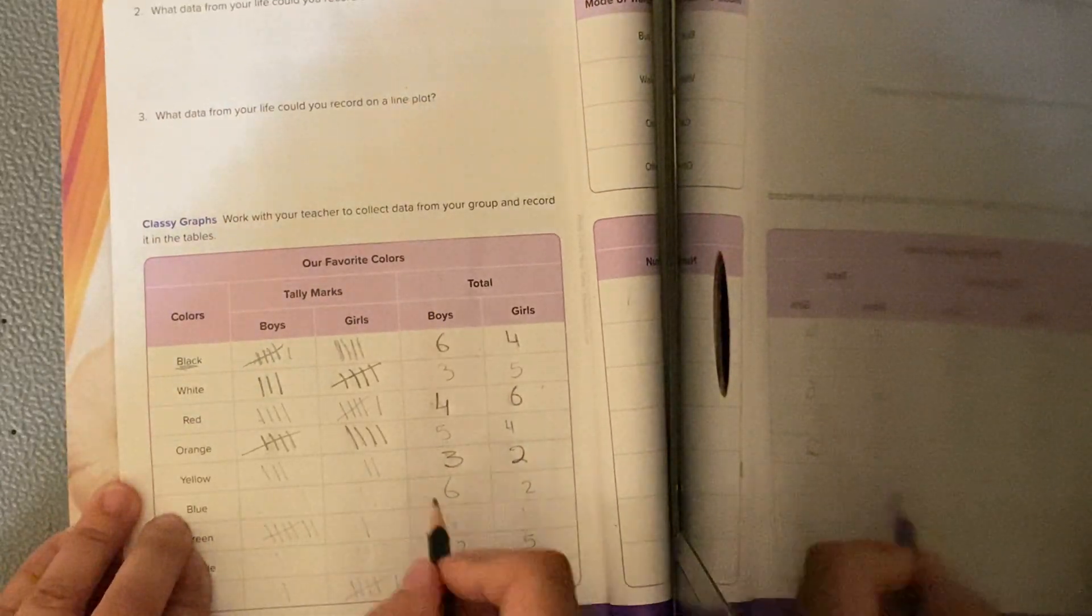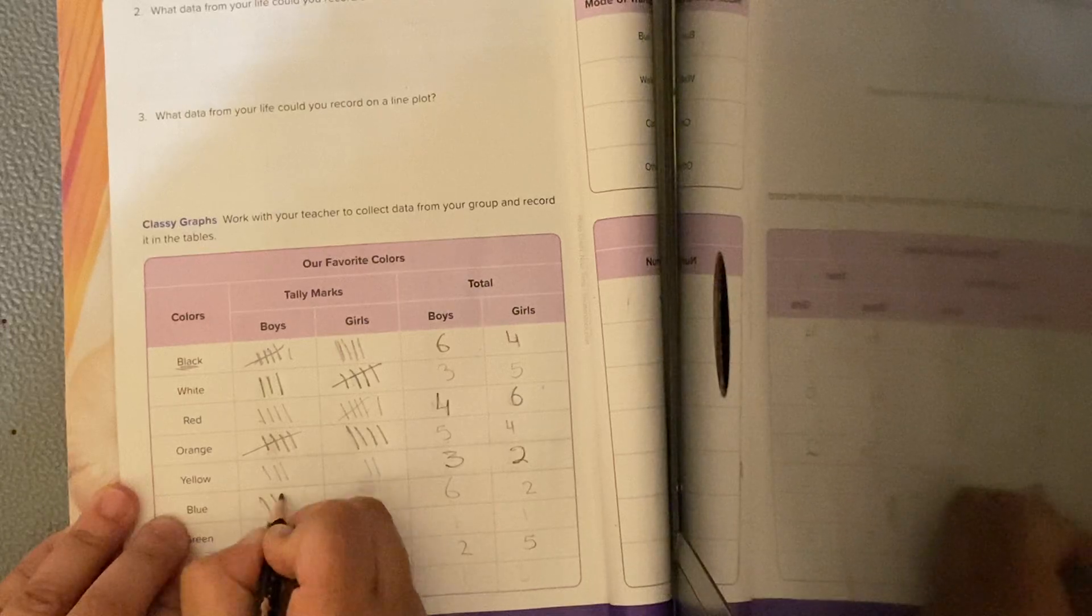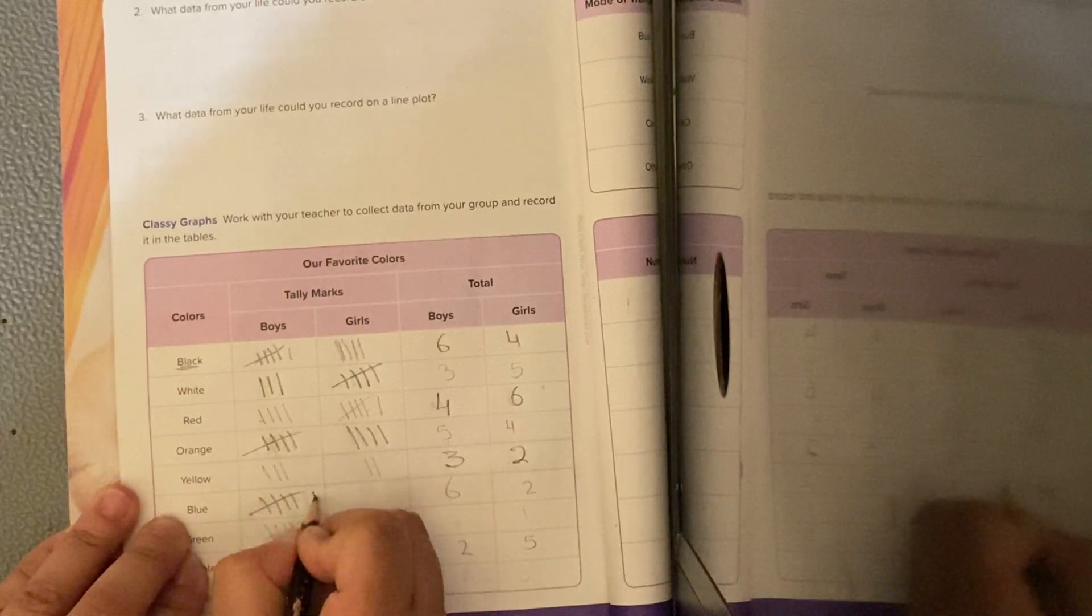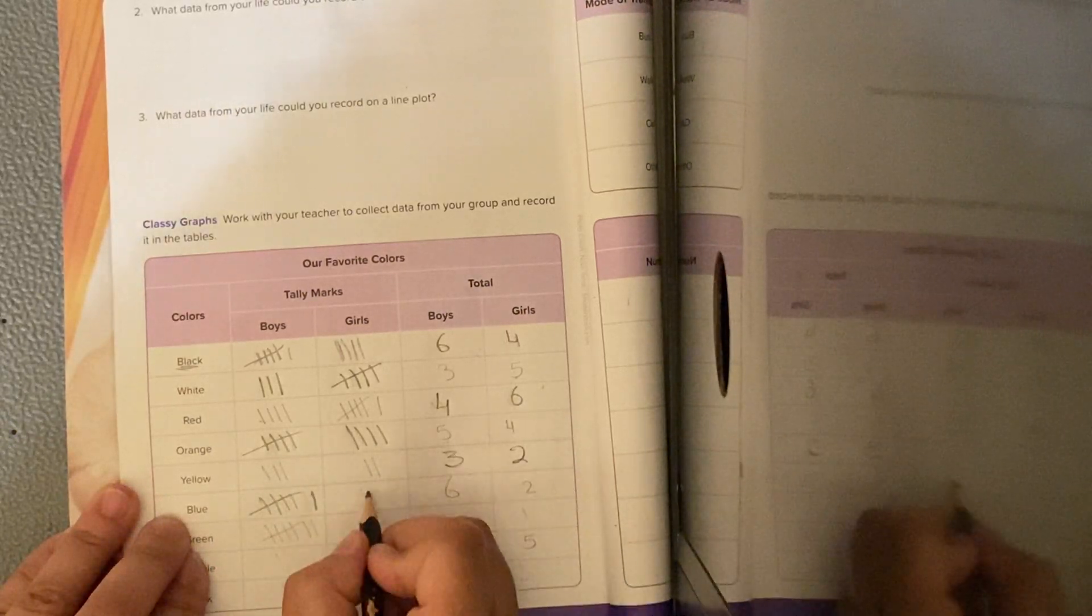The blue. How many boys like blue? 6. 1, 2, 3, 4, 5, 6. How many girls? 2. 1, 2.